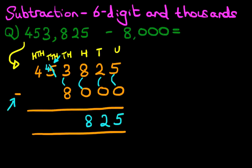And the one we have taken from here, we're going to add it over here. The thousands column now becomes 13 minus 8. 13 minus 8, that's right, is 5.